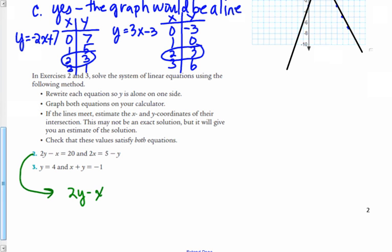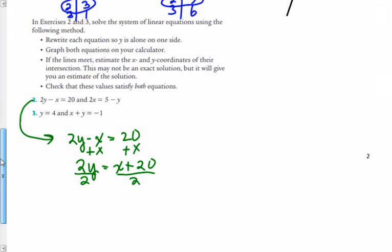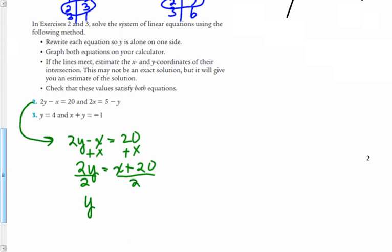So to solve this equation, 2y minus x equals 20, we need y to be alone. So let's add x to both sides. That gives us 2y is equal to x plus 20. Then we're going to divide by 2, both sides. And we end up with y is equal to 1 half x plus 10.